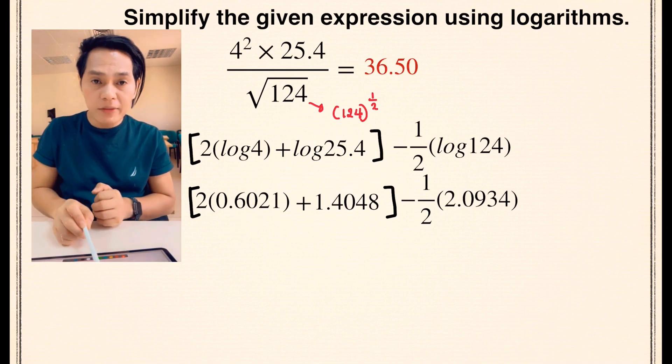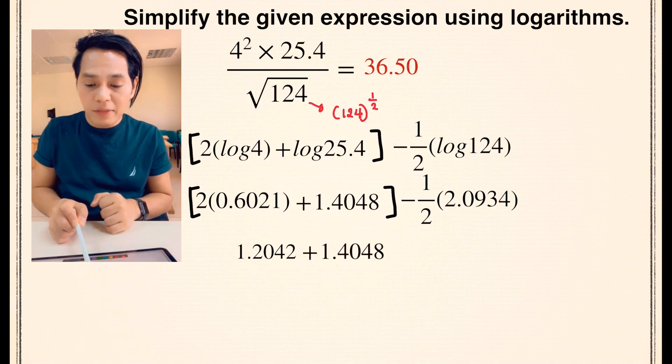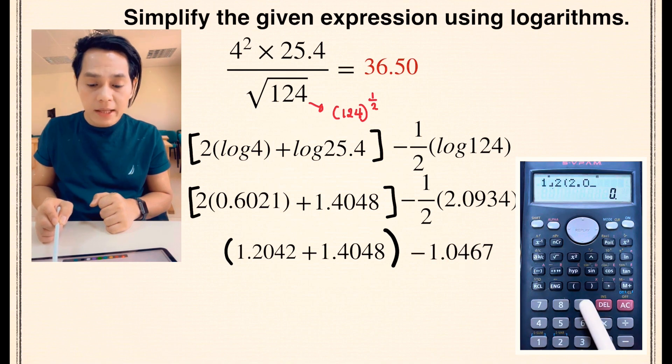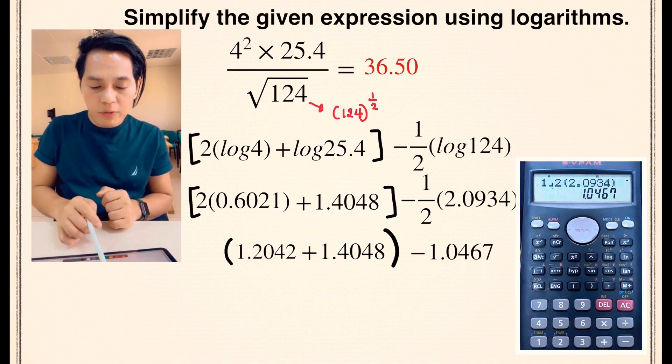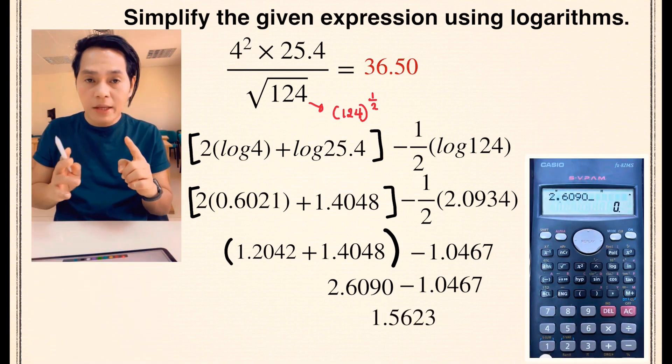The next thing to do is we are going to simplify the expression inside the grouping symbol. So 2 times 0.6021, that's equal to 1.2042. And bring down this 1.4048 and then multiply 1 half by 2.0934, and that's equal to 1.0467. Then bring down minus. And the answer for this sum here is 2.6090.